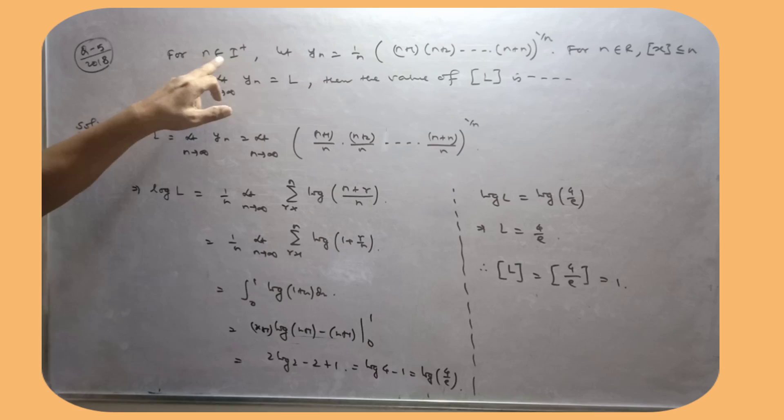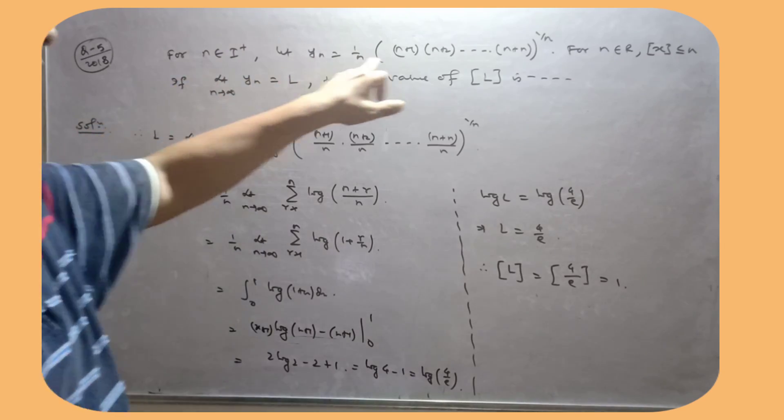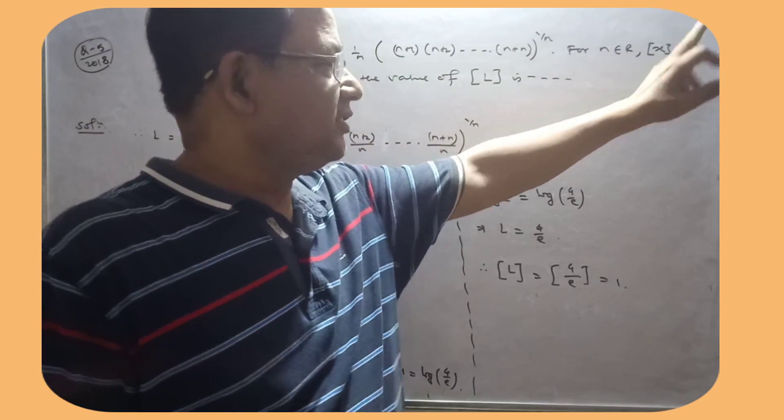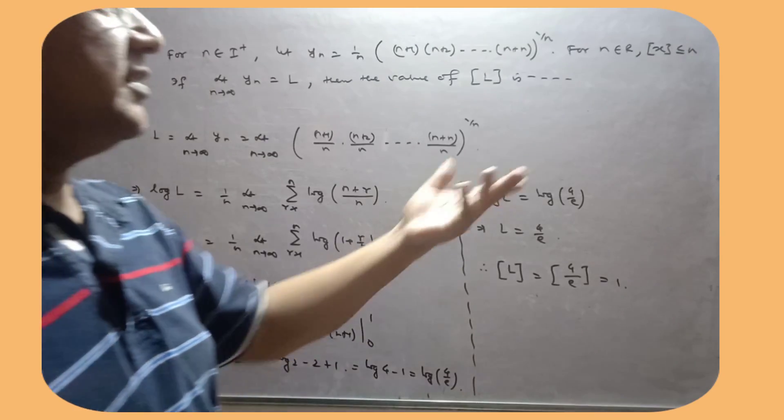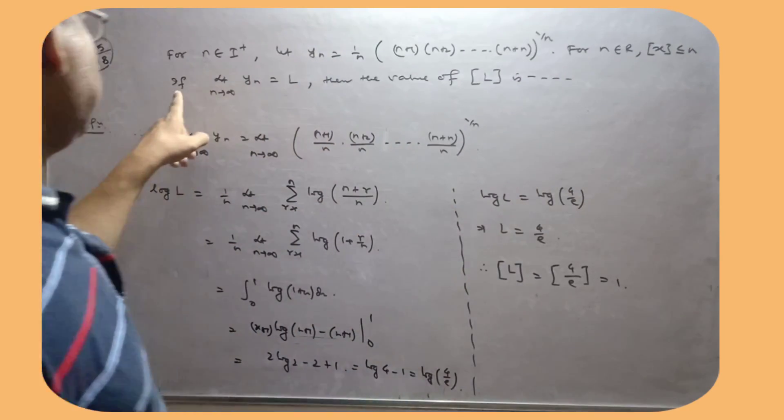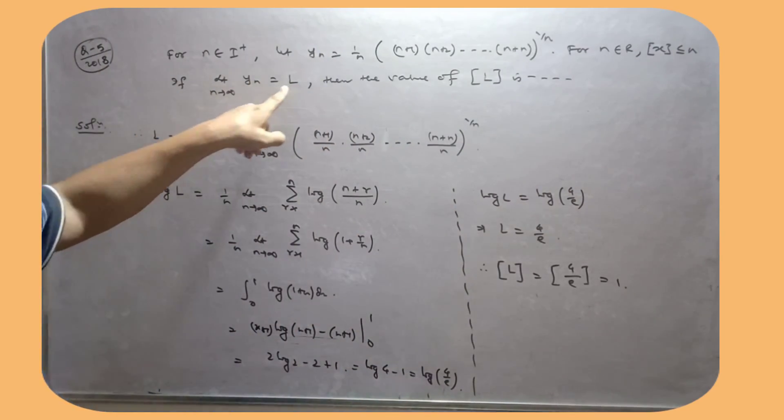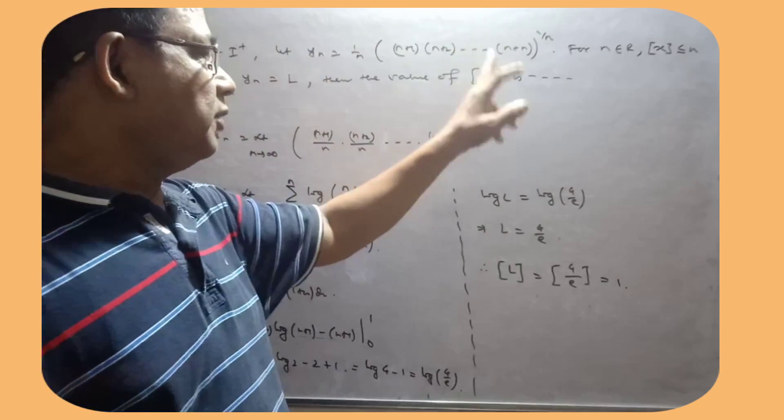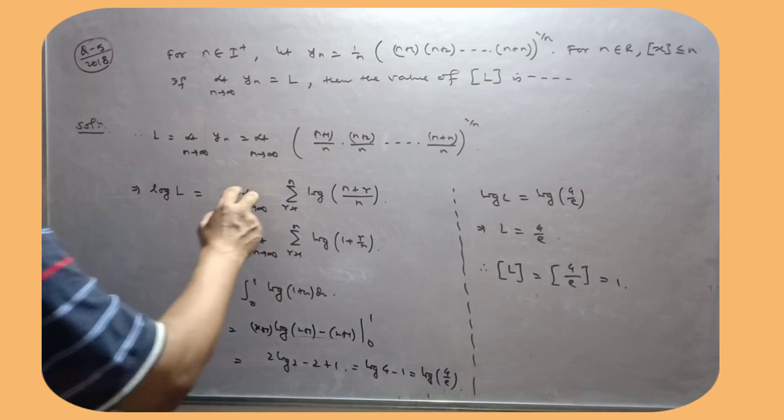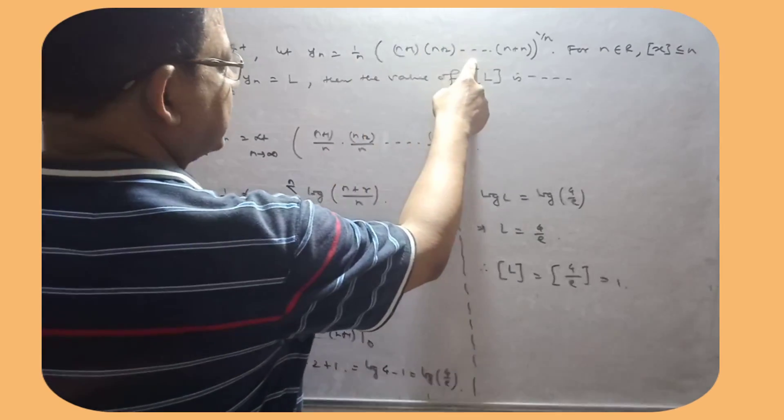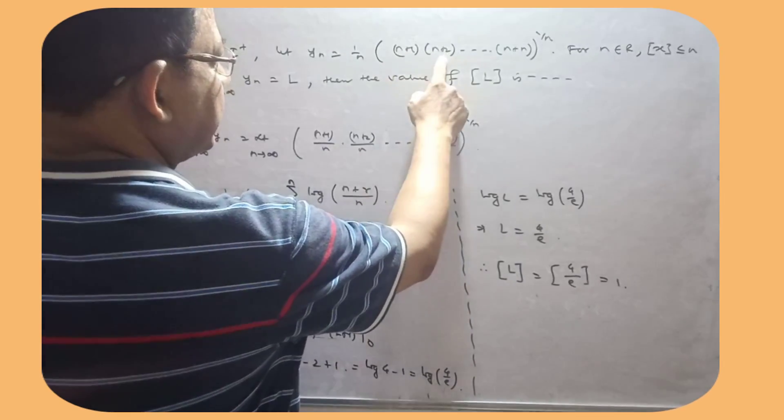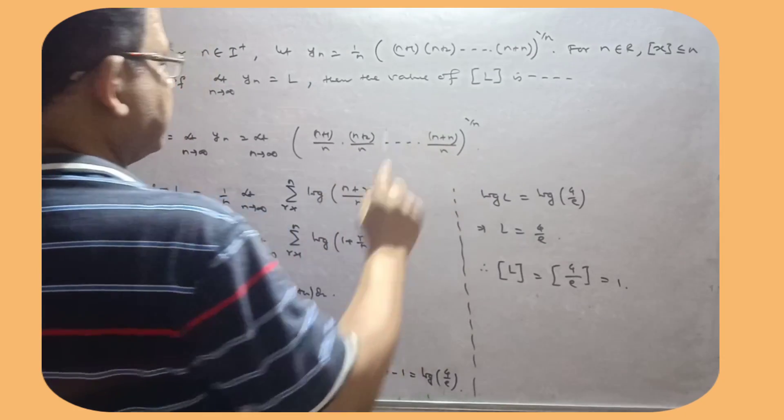For every positive integer N, let YN is equal to this, where greatest integer of X is always less than and equal to X. If limit of N tends to infinity YN equal to N, then the value of greatest integer of L kya hoga? So my dear friends, yeh jo N hai, yeh N chook ka under lao, toh yeh pe ek N hoga, yeh pe ek N, yeh pe ek N, yeh pe ek N, usse likha hai.